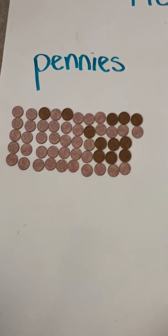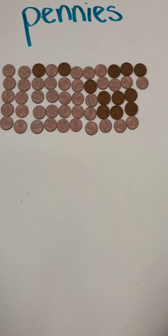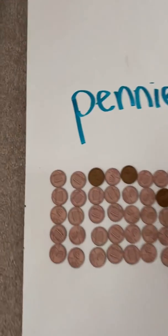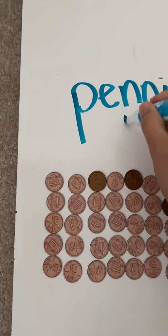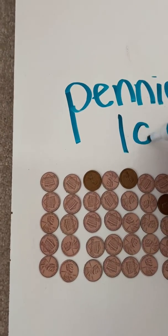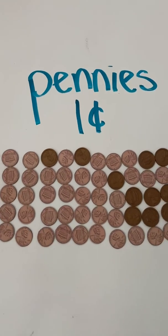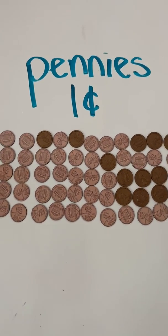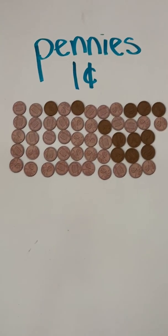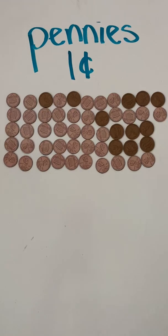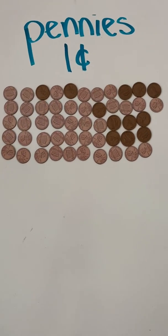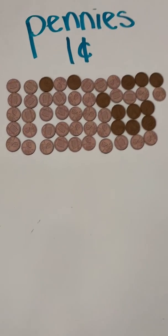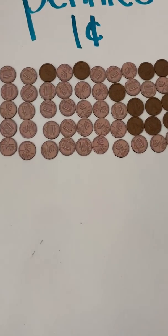Pennies are worth — I hope you said — one cent. That's our cent symbol, the C with the line through it. So since pennies are worth one cent, we're going to count by one all the way up to 100 to make a dollar.